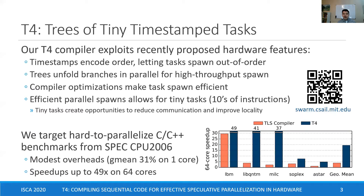We evaluate T4 by parallelizing C and C++ benchmarks from SPEC CPU 2006. By spawning many tiny tasks, T4 imposes modest overheads to scale these real-world programs to tens of cores, achieving up to 49x better performance than serial code on 64 cores.